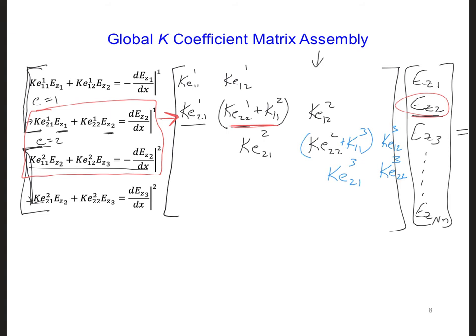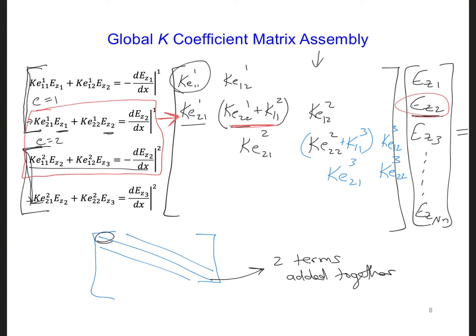And so this would keep going on and on until we get to the last element of the grid. In the end, what we'll get is a global K matrix with zeros everywhere in the K matrix except along the three diagonals. And along the center diagonal, so this middle one here, we're going to have two terms added together except at the very first one.